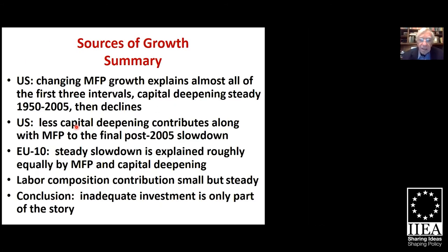Looking at the summary of the sources of growth analysis: changing multi-factor productivity growth is the big story for the United States in the first three intervals, and then capital deepening steps in to play a role in the final interval. In the European group of 10 — the data on growth accounting here is for the 10 biggest of the 15 countries — the steady slowdown is explained roughly equally by multi-factor productivity growth and capital deepening. Labor composition doesn't add much and it doesn't change much. So the conclusion is: if you ask why productivity growth has slowed down, it's only partly because of inadequate investment.